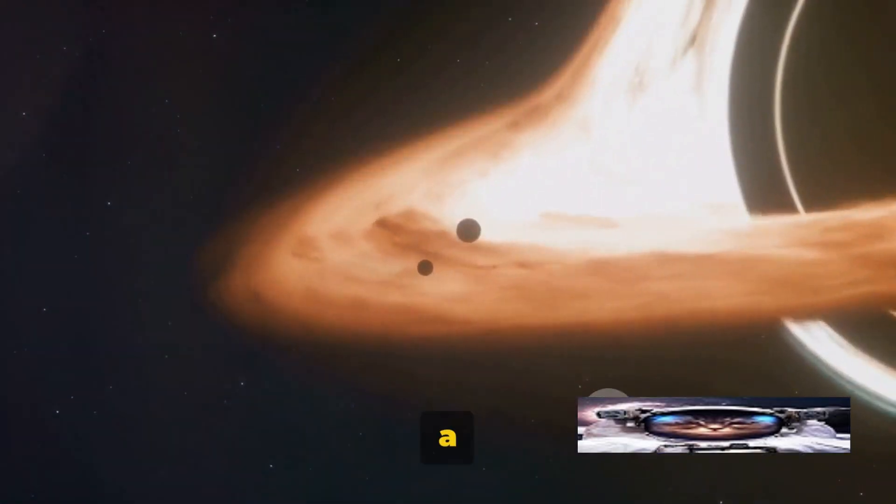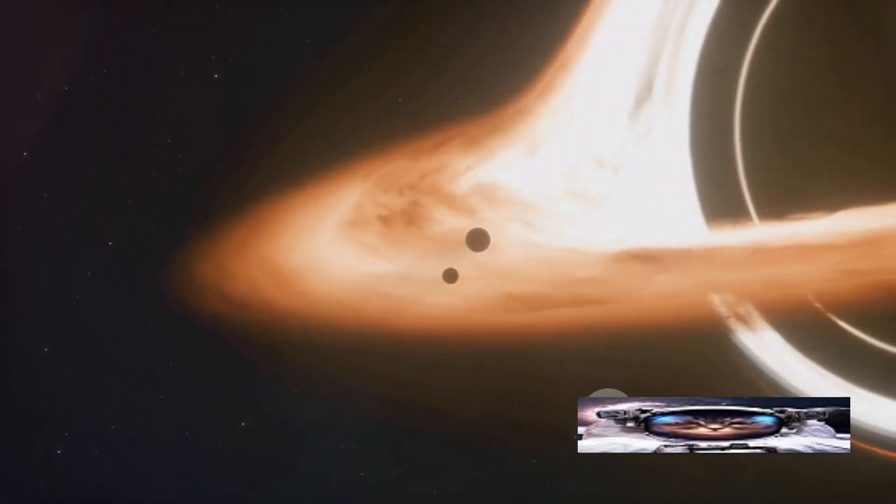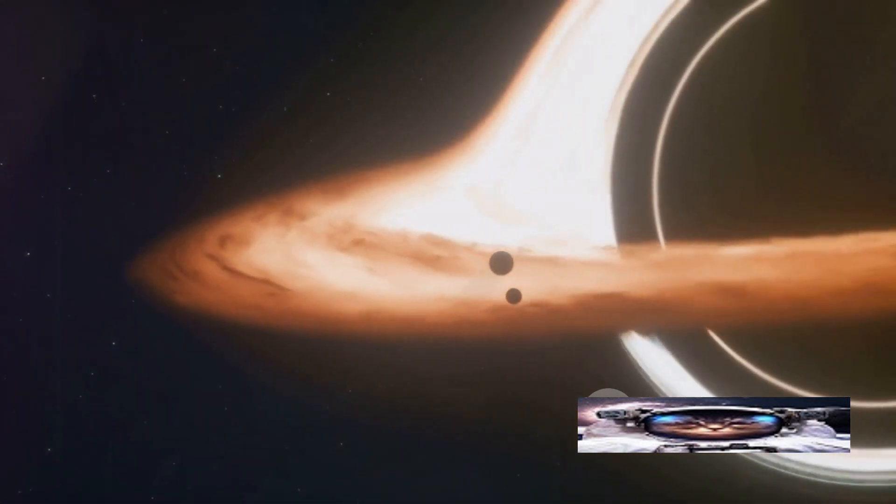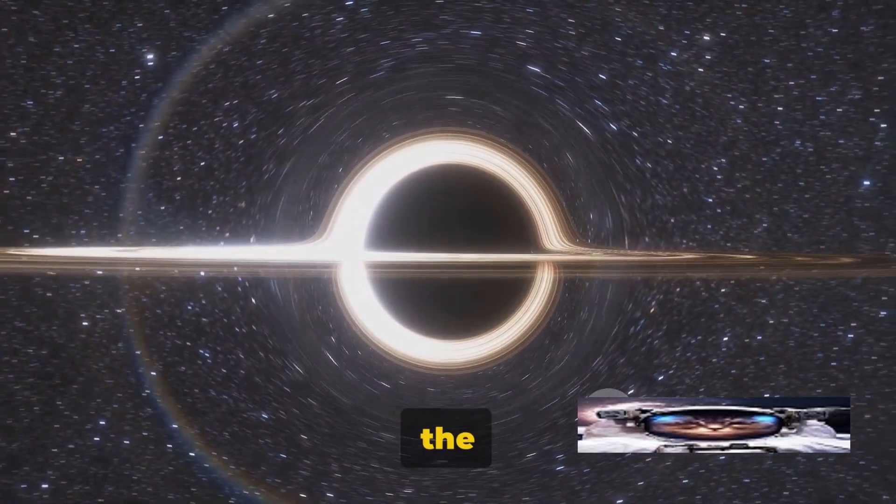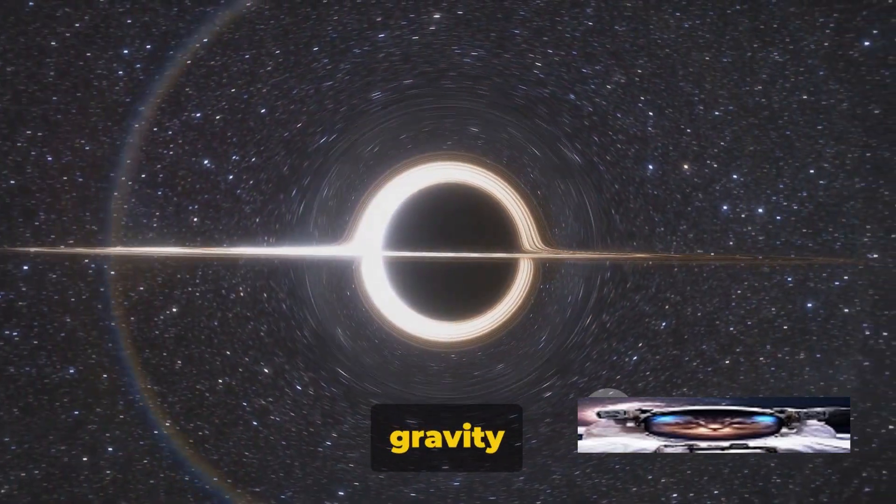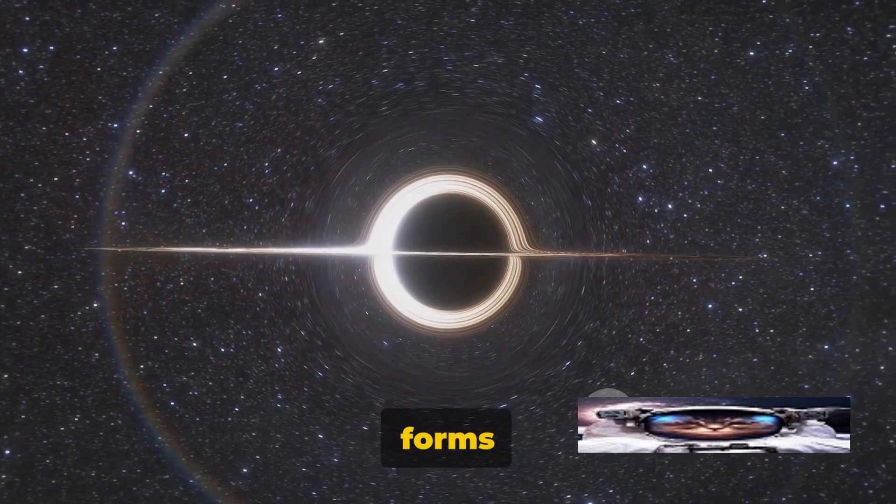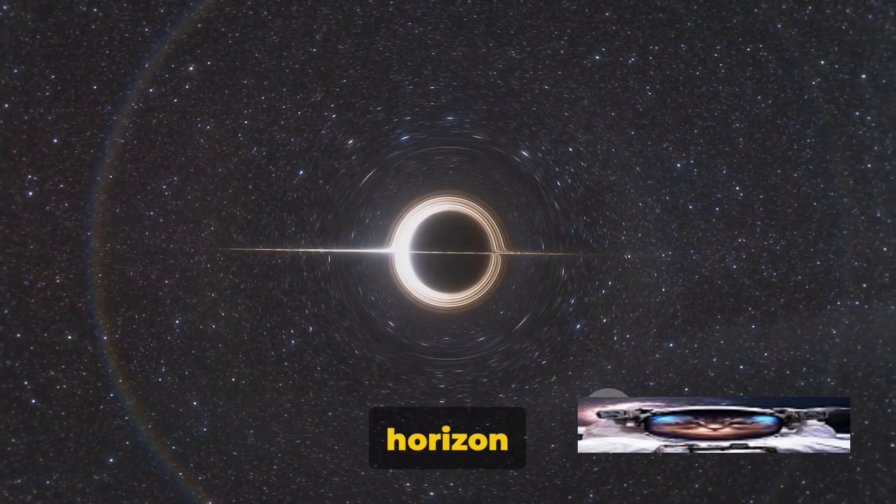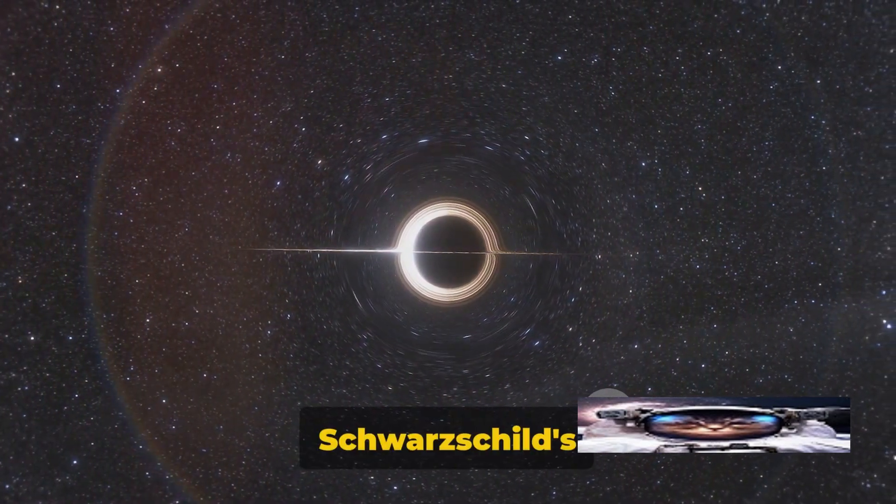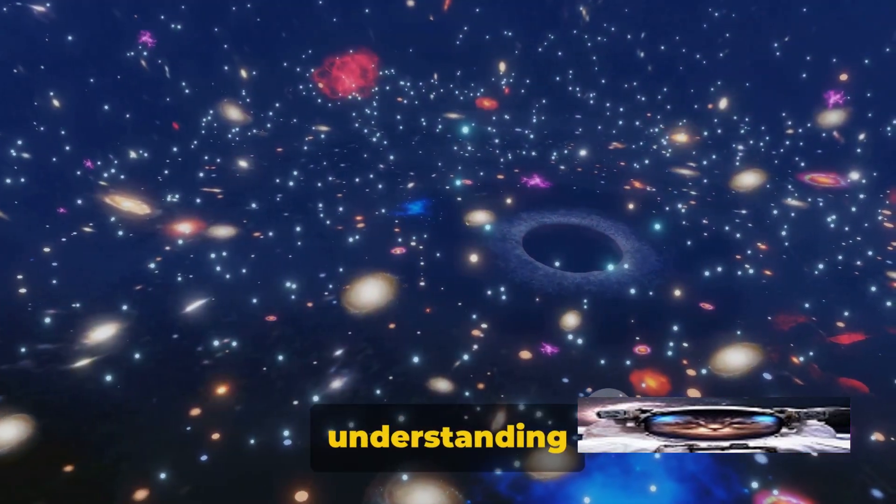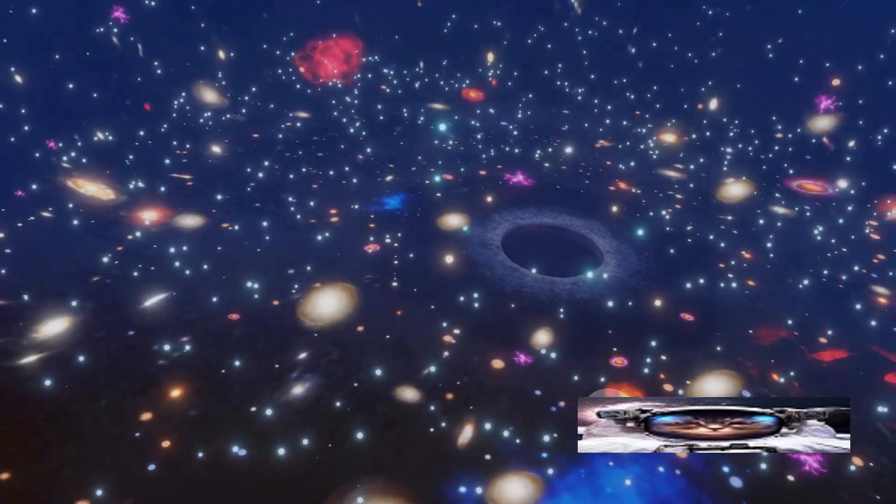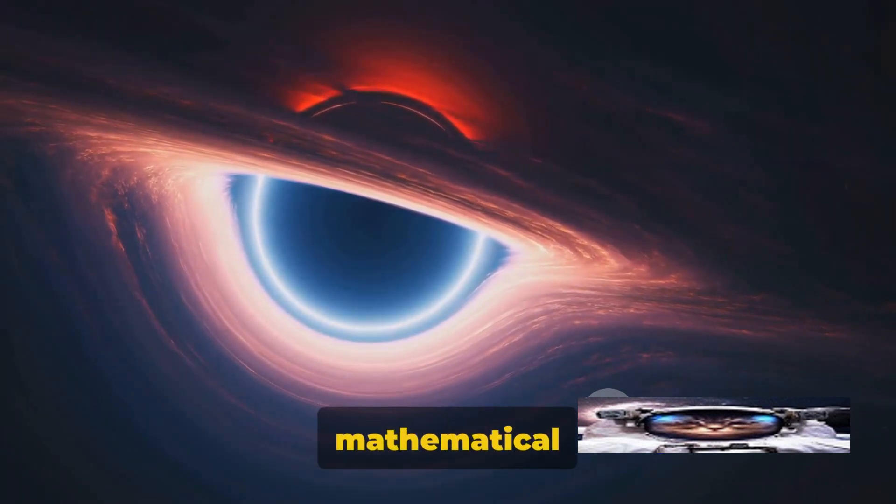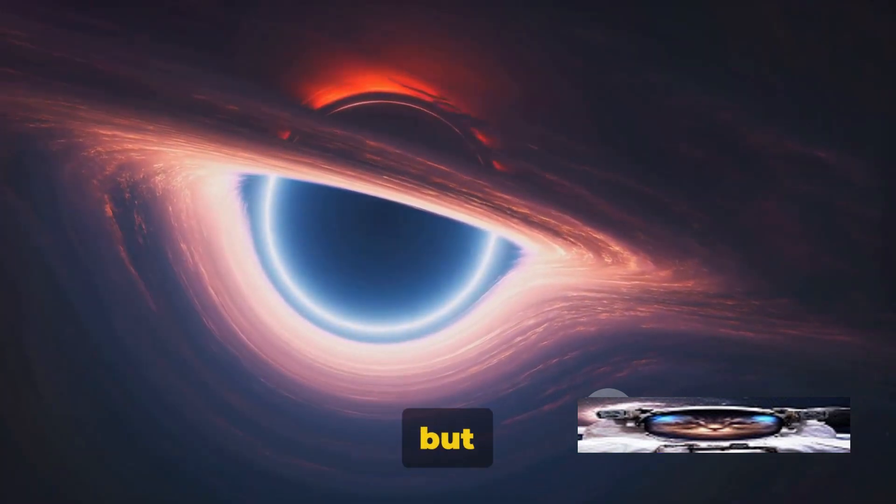Enter Karl Schwarzschild, a German physicist and astronomer, who was the first to solve Einstein's equations during the chaos of the First World War. His solutions revealed the mathematical possibility of points in space where gravity is so intense that it forms a one-way door out of our universe. These points are what we call the event horizon of a black hole. Schwarzschild's solution was an important stepping stone towards our understanding of black holes. But at the time, these cosmic monsters were still purely theoretical. They were mathematical quirks, fascinating but seemingly unreal.